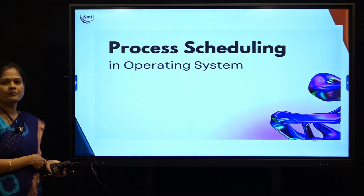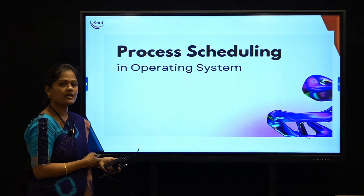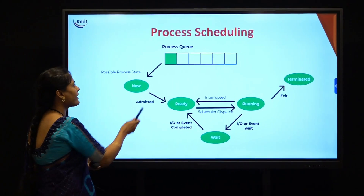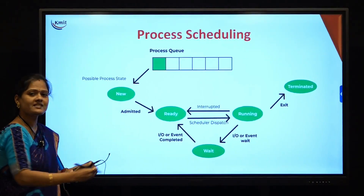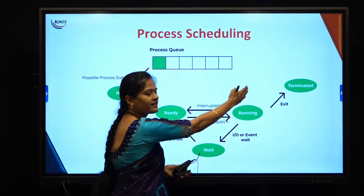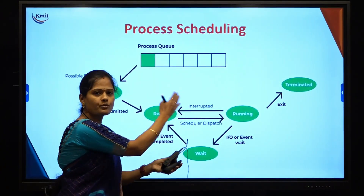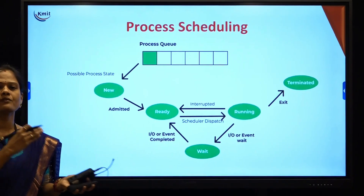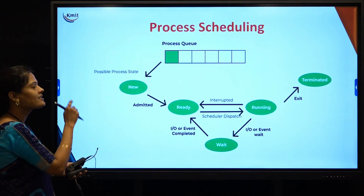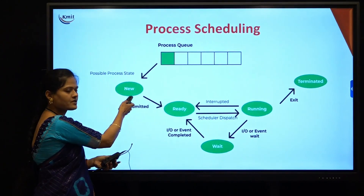In today's session on operating systems, we'll be moving on to the next topic: process scheduling. What do you mean by process scheduling? You have n number of processes and we have seen the different states a process exists in — from new it moves to ready state, when executed it is in running state, and finally it goes to terminated. Scheduling is the process that takes responsibility of making a process move from one state to the other state.